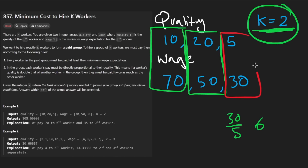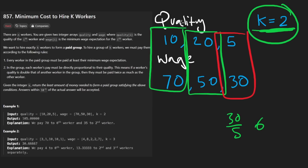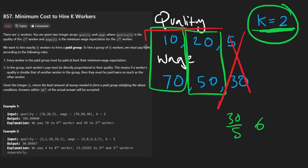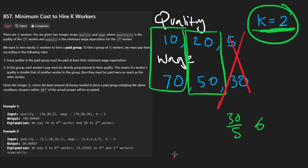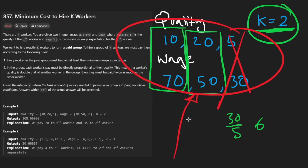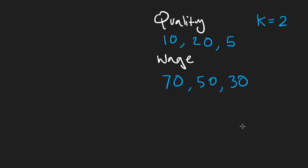...but let's skip this worker, or we could include this worker and skip this worker, or we could just skip this worker altogether and leave it as these two workers. The way we're going about this in a random order, it would be better for us to sort this.